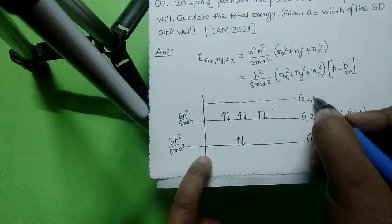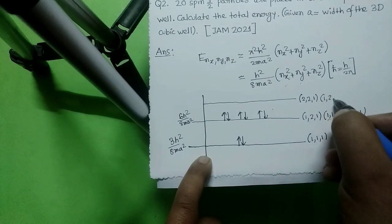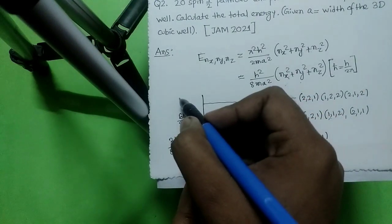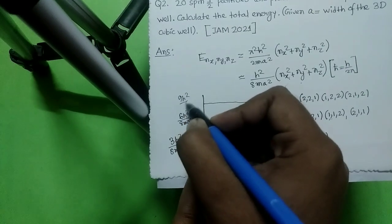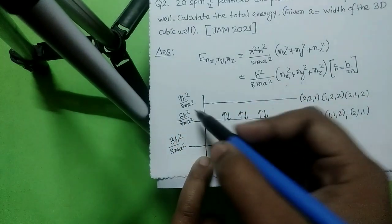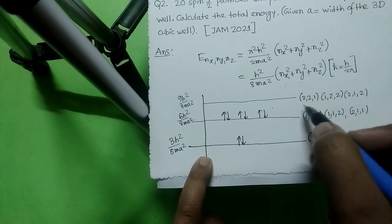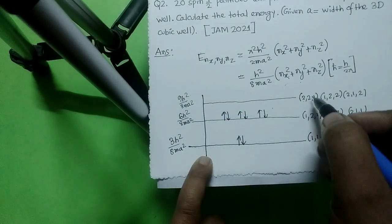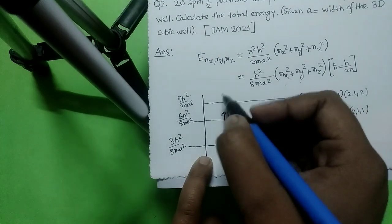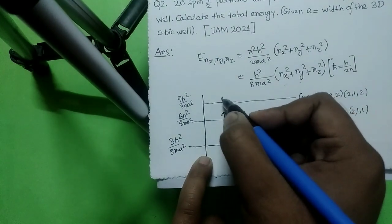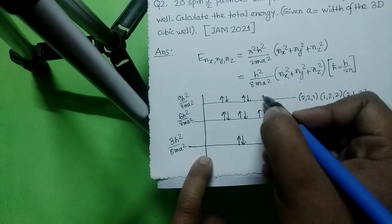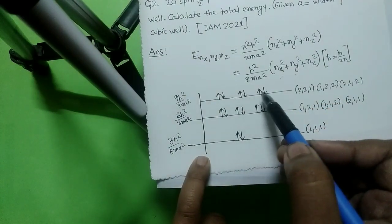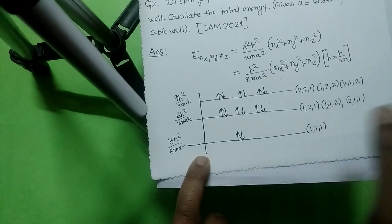The next energy level is defined by quantum numbers such as (2,2,1), (2,1,2), and (1,2,2), giving energy 9h²/8ma². There are three degenerate energy states here, so 6 particles are distributed in this level. Running total: 2 + 6 + 6 = 14 particles so far.